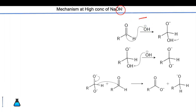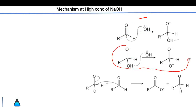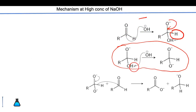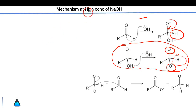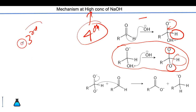At low concentration, the +R effect of oxygen removes H minus in one step, making it a third-order reaction. However, at high concentration, there is one additional step — both O minus groups show the +R effect together to remove this hydrogen — making it a fourth-order reaction. So the key difference between high and low concentration conditions is the order of the Cannizzaro reaction.